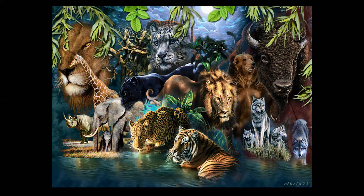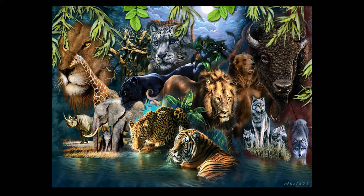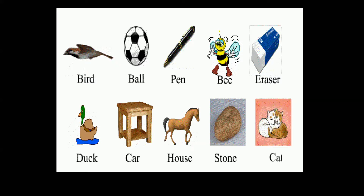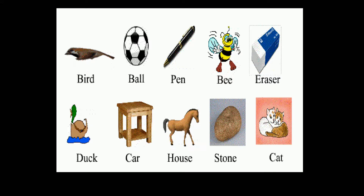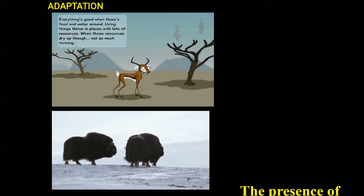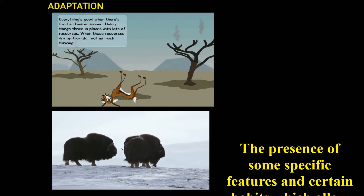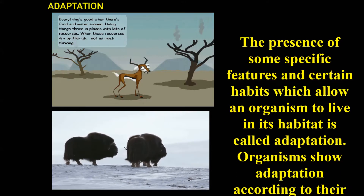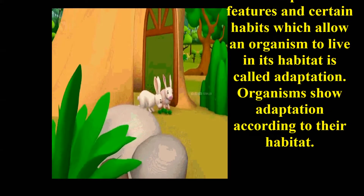Children, we see many things around us which can be grouped into two big groups based on their characteristics. These are called living and non-living things. For example, men, dogs, goats, cats, ants, plants and trees are some of the living things. Cars, plastic goods, stones, doors etc. are some of the non-living things. The presence of some specific features and certain habits which allow an organism to live in its habitat is called adaptation.